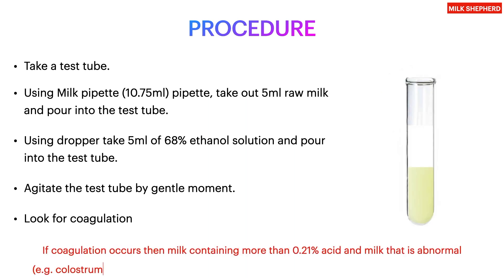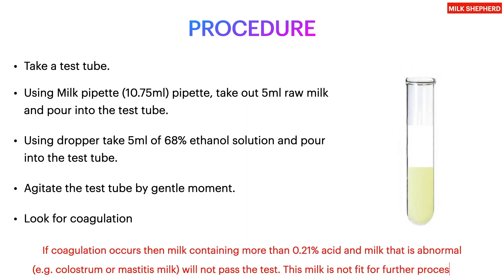If coagulation occurs, the milk contains more than 0.21% acid, indicating abnormal milk that will not pass the test — for example, colostrum or mastitis milk. This milk is not fit for further processing.